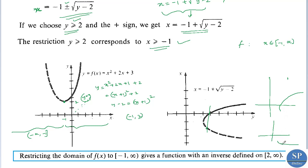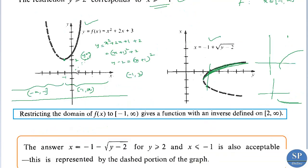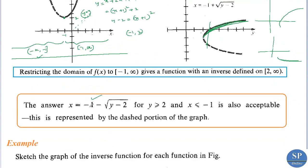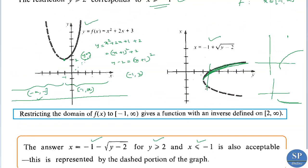Similarly, we could restrict the domain to minus infinity to minus 1, giving x equal to minus 1 minus root of (y minus 2) for y greater than or equal to 2 and x less than or equal to minus 1 — the left half. If we consider the full domain minus infinity to infinity, the graph of the inverse will not be a function. So f of x equal to x squared plus 2x plus 3 has an inverse only if the domain is restricted to minus 1 to infinity or minus infinity to minus 1.